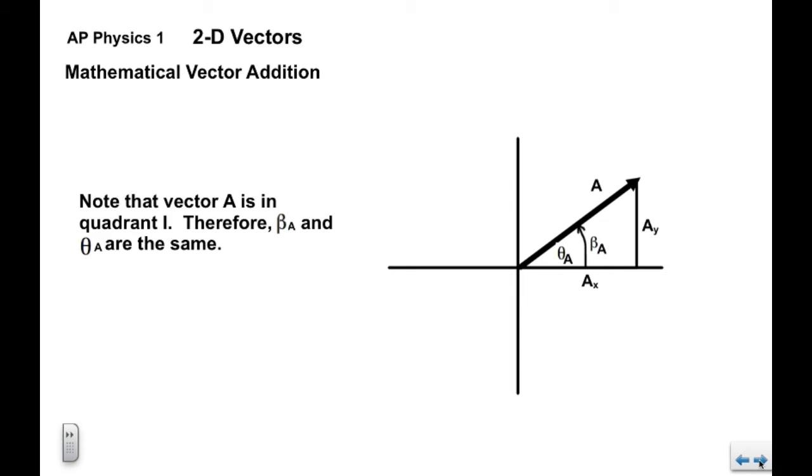Here we have a vector a in quadrant 1. We know that the mathematical angle beta is measured from the positive x axis upward. So here's beta, and theta is between the vector and the x axis. So in this case they are the same.